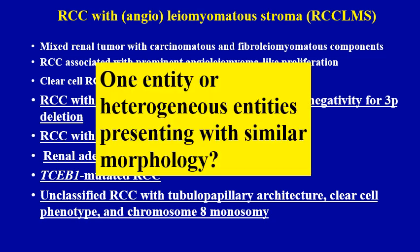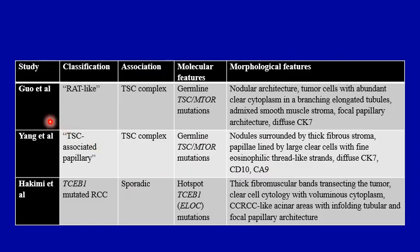One very important question that comes to mind is whether this is really a distinct tumor entity or a variety of renal tumor entities presenting with the same or similar morphology. Recently, two major series of hereditary tuberous sclerosis-associated renal cell carcinoma were published by Guo et al. and Young et al. They described a subset of these RCCs occurring in a hereditary setting having tumor morphology very similar to RCC-LMS. Tumors in Guo et al. were discussed as RAT-like, while Young et al. referred to them as TSC-associated papillary renal cell carcinoma.